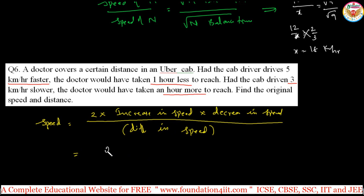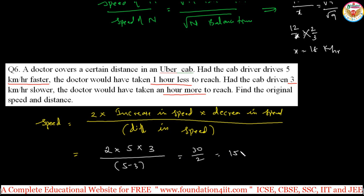Applying the formula: 2 × 5 × 3 divided by (5 − 3) = 30 / 2 = 15 kilometers per hour. So the original speed is 15 kilometers per hour.